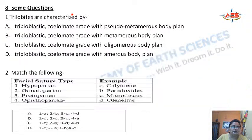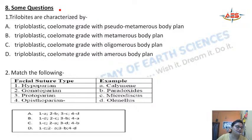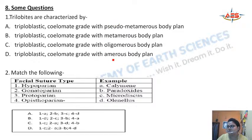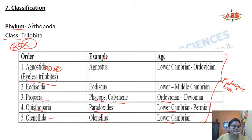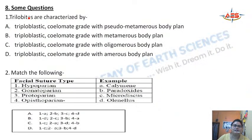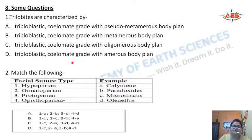Now let's look at questions. Before that, if there is any doubt, please ask now, because it will be cleared immediately. Question 1: Trilobites are characterized by — (a) triploblastic coelomate grade with pseudomerous body plan, (b) triploblastic coelomate grade with metamerous body plan, (c) triploblastic coelomate grade with oligomerous body plan, or (d) triploblastic coelomate grade with amerous body plan.